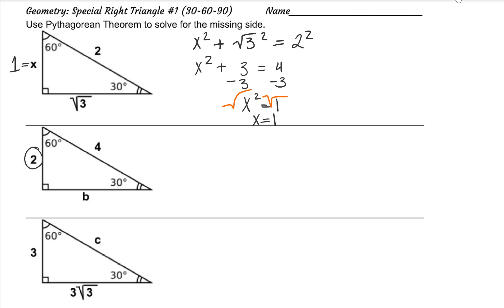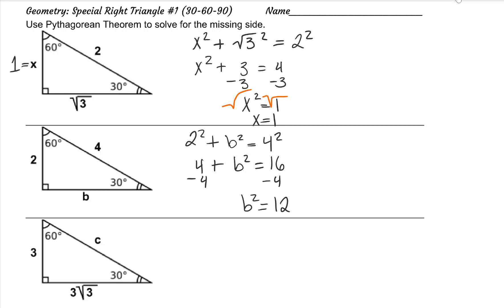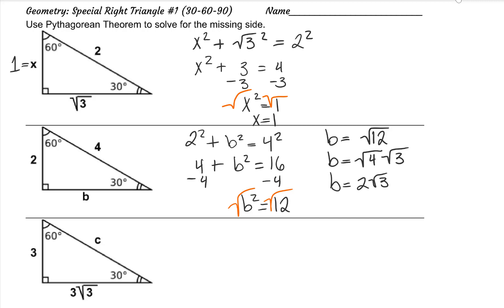Let's solve for b. Here are the legs, here's my hypotenuse. 2 squared plus b squared equals 4 squared. As we solve for b squared, we're going to square root both sides to get b by itself. b is equal to square root 12, but we can simplify the radical. The biggest perfect square that goes into 12 is 4. 4 times 3 gives me 12. The square root of 4 is 2, and we drop square root 3. So this side length is 2 times square root 3.